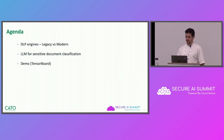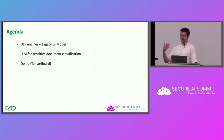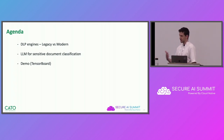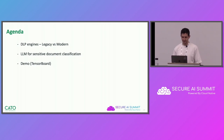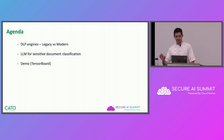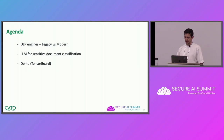As for the agenda, we're going to start off by going over the concept of what DLPs are, specifically the notion of legacy DLPs versus modern DLPs. Then we're going to show how we can use LLMs to create modern DLP solutions by classifying sensitive documents. Finally, we're going to finish off with a quick demo using TensorBoard. I'm going to assume some prior knowledge with deep learning concepts, but this is still a high level talk, so we're not going to dive into too much technical detail.